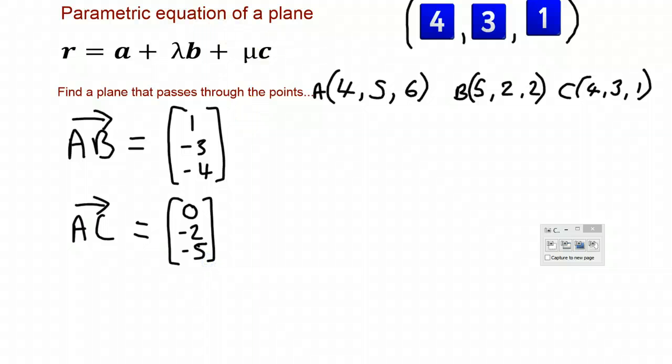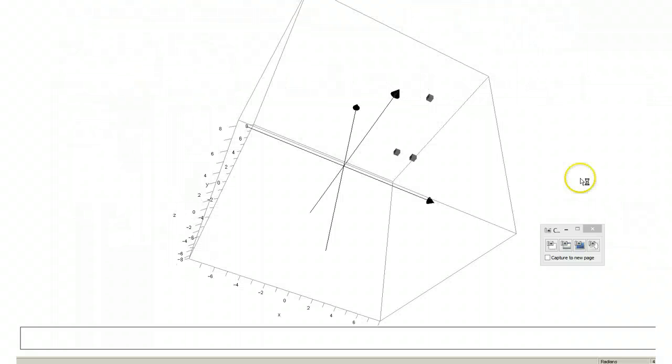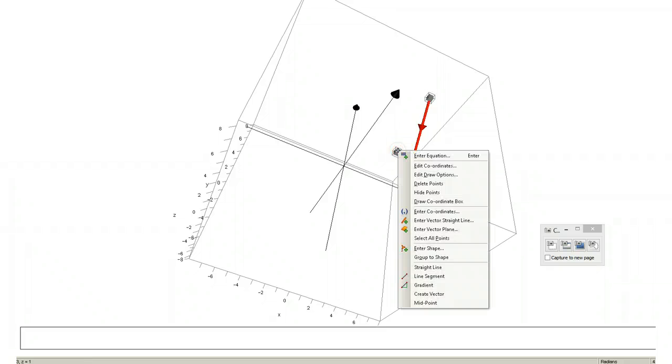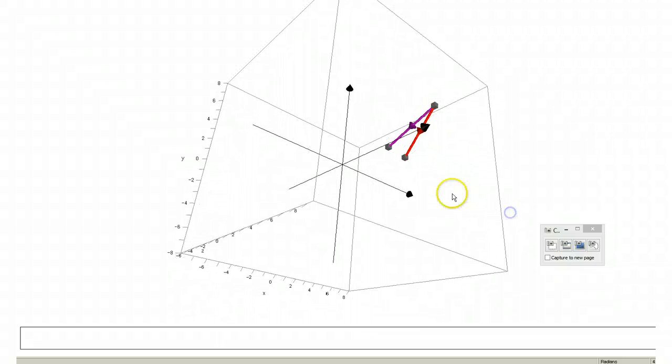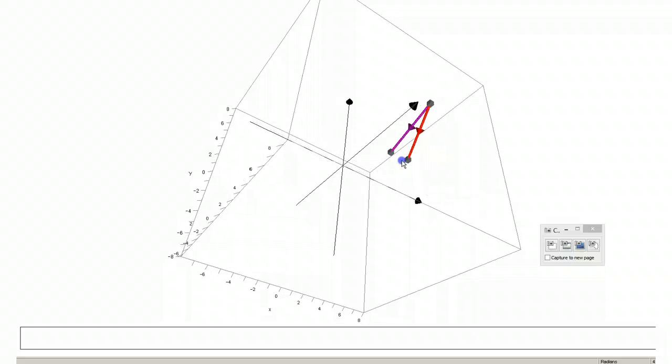So just to highlight what's going on here, I'm just going to go back to Autograph and I'm going to mark the vectors AB and AC. So over here I'm just going to create a vector there, and this is our point C. I'm going to put those two together and we're going to create a vector there.